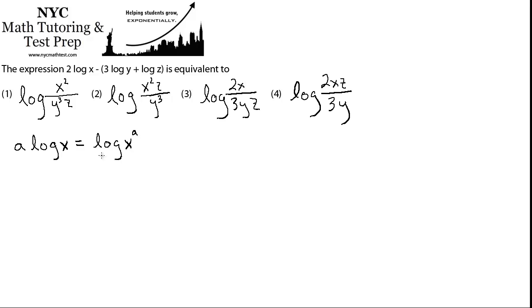If you have a log x, that's equivalent to log of x to the a. That's the same thing. You can take the coefficient and remove it and make it the exponent of the thing that you're taking the log of. So you can say, I'm going to make the a an exponent of x, and then we're taking log of x to the a. And you can also write this part in parentheses if you want. It's not required. So that's one rule.